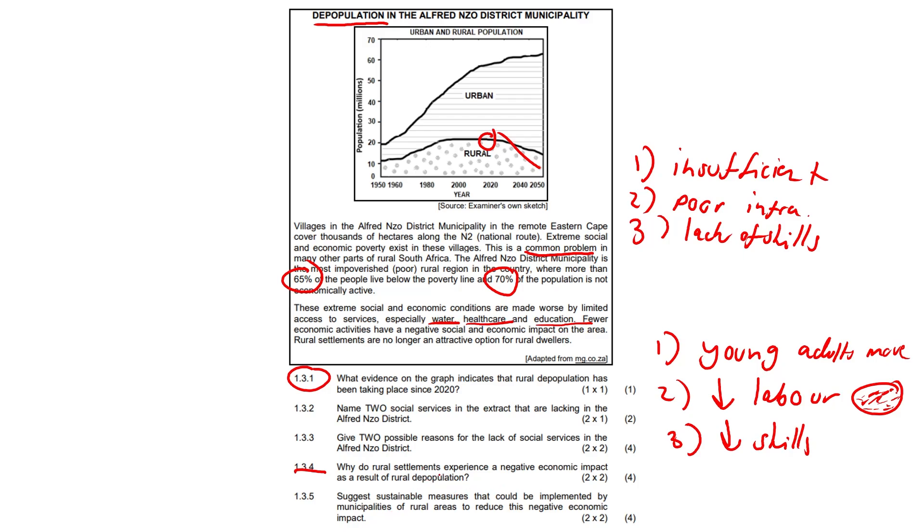Next, suggest sustainable measures that could be implemented by municipalities of rural areas to reduce this economic impact. 1.3.5, there's quite a few here. We need to name any two. So two answers with a pretty decent substantiation. Not as heavy as you would in your home language, like English or Afrikaans or Zulu home language.